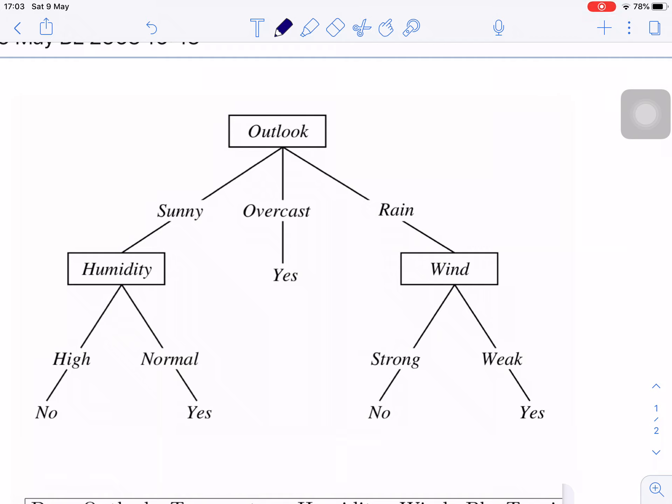Like in this case, the knowledge of this case: this person will play when the outlook is sunny and humidity is normal, or the outlook is overcast, he will play, or if the outlook is rain but the wind is weak, play. In two cases that he won't play is: outlook is sunny and humidity is high, he won't play, and outlook is rain and wind is strong, he won't play also.